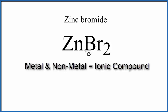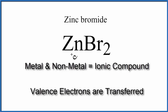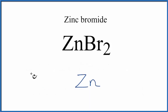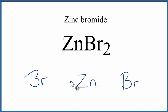That means that the metal is going to transfer electrons to the nonmetal. We'll put zinc in the center, and then bromine on each side. Zinc has two valence electrons, and then bromine, which is in group 17 or 7A, has seven valence electrons.